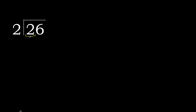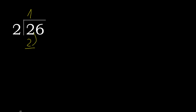26 divided by 2. Here 2 is not less, therefore with 2: 2 multiplied by which number is nearest to 2 but not greater? 2 multiplied by 1 is 2, which is not greater. 2 minus 2 equals 0.